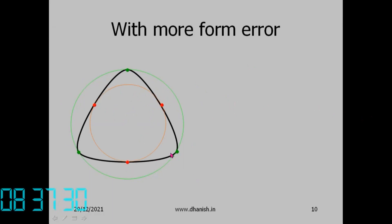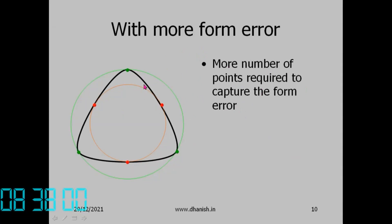Normally we choose points randomly without knowing the actual shape of the workpiece. We need a sampling strategy that gives a good result regardless of the actual shape. The number of points depends on how much form error exists — if form error is zero, three points are enough. If you want to estimate roundness error, a large number of points is needed.